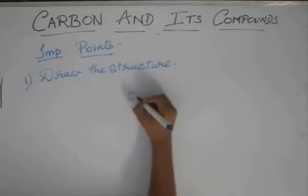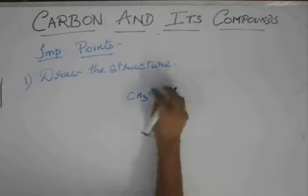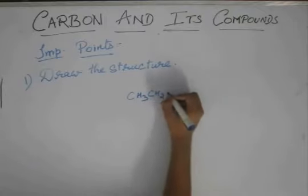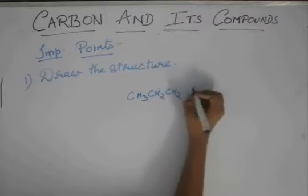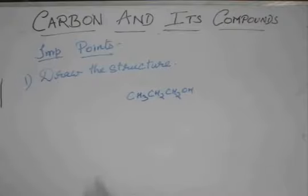You have this compound CH3CH2CH2CH2OH and you are asked how many different structures can be there for this.